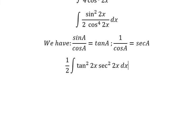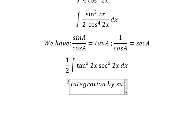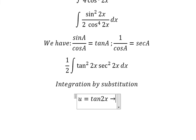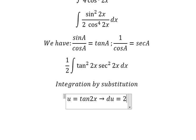Next, we can use integration by substitution. So I will put U equal to tan 2x. If I take the first derivative of both sides, we have dU equal to 2 secant squared 2x dx.